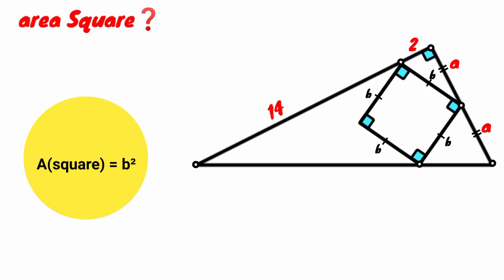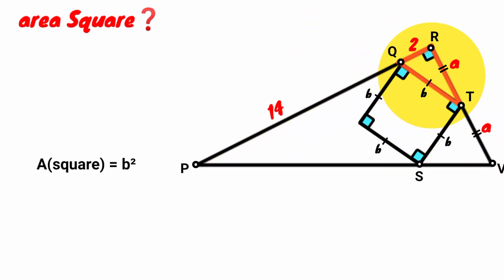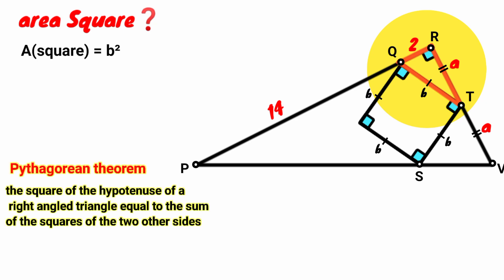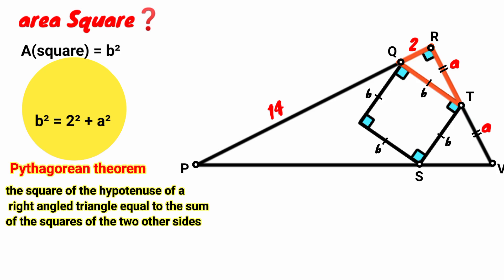We'll start by labeling the points. Now look at triangle QRT. Because of this right angle, it is a right angle triangle. We have the lengths of its sides to be 2, A, and B. We use the Pythagorean theorem. The Pythagorean theorem states that the square of the hypotenuse of a right angle triangle equals the sum of the squares of the other two sides. The hypotenuse faces the right angle. So by Pythagoras, B squared equals 2 squared plus A squared. 2 squared is 4, so B squared equals 4 plus A squared.